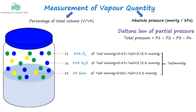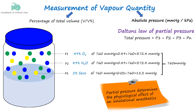These concentrations are determined by a gas analyzer in the anesthesia circuit and can also be ascertained from the vaporizer dial. The partial pressure of the anesthetic agent determines its physiological effect, as the agent's partial pressure drives its absorption into the bloodstream and tissues. When we adjust the concentration on the vaporizer dial setting, we are indirectly adjusting the partial pressure of the anesthetic agent relative to oxygen and other gases.